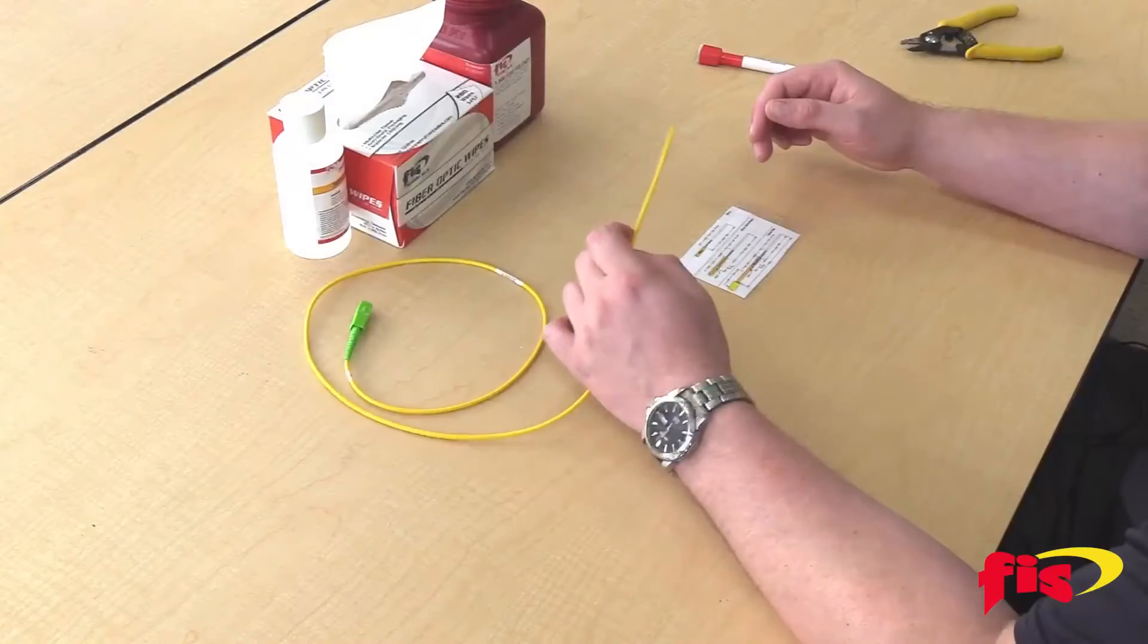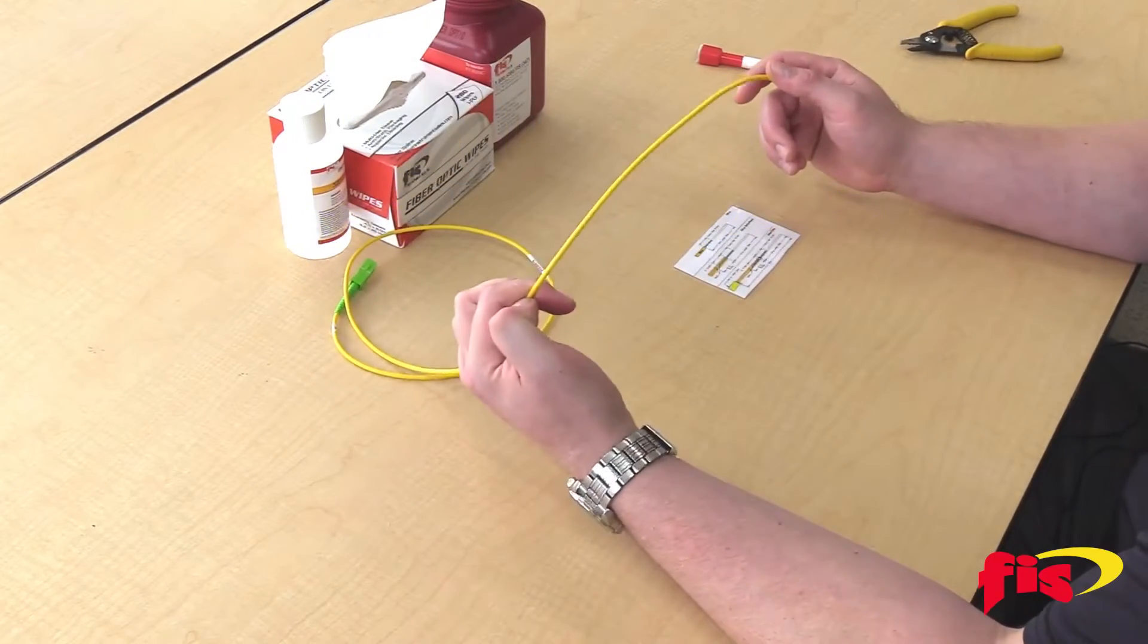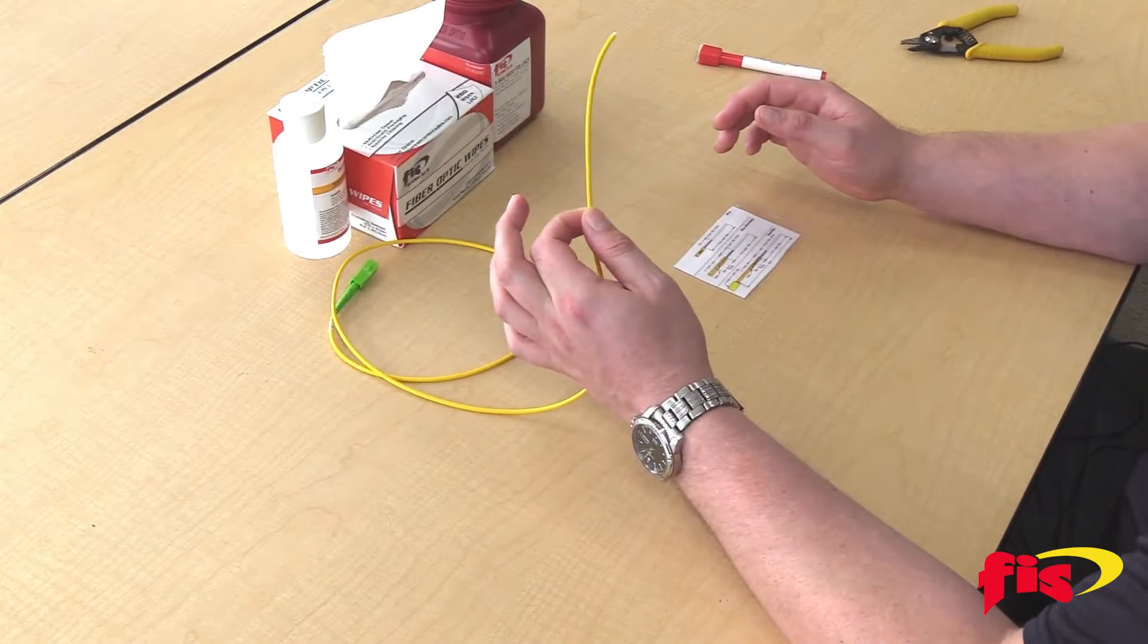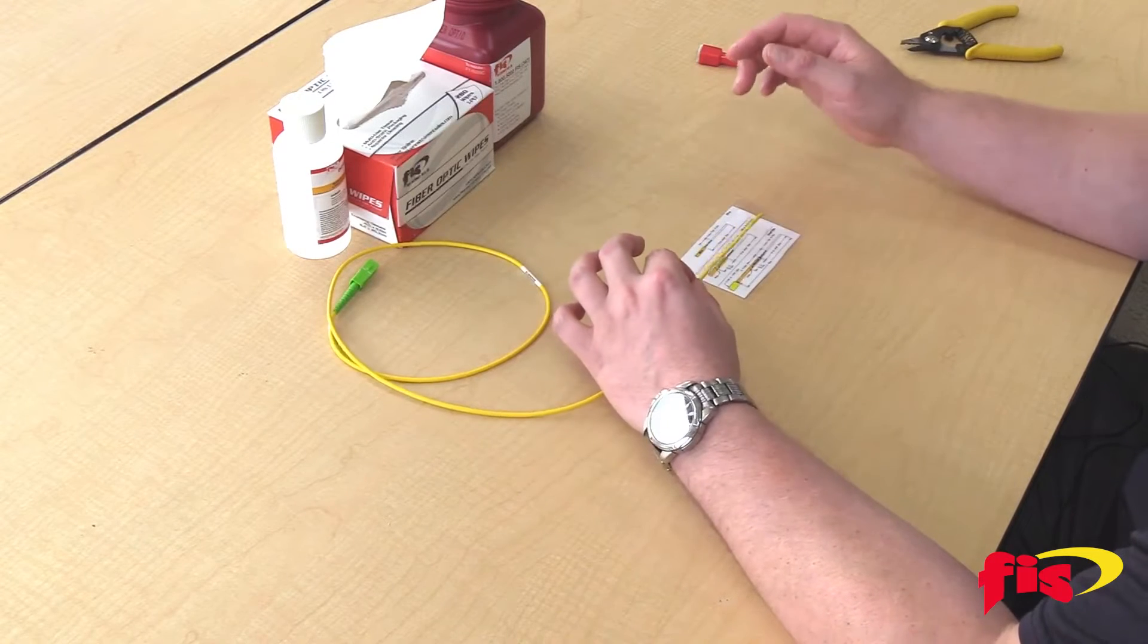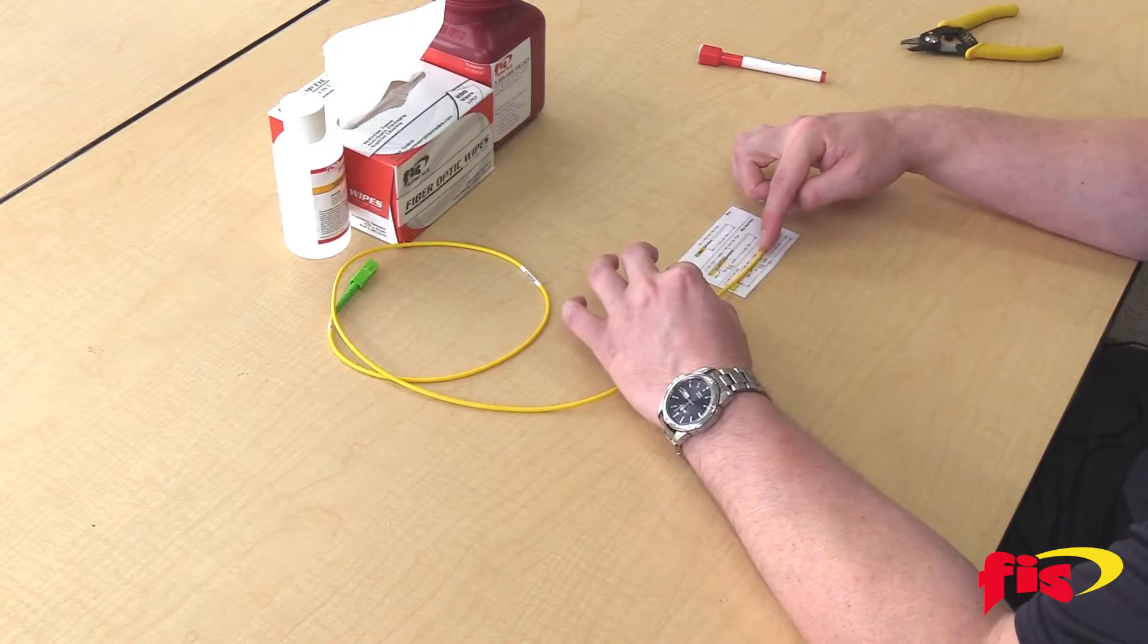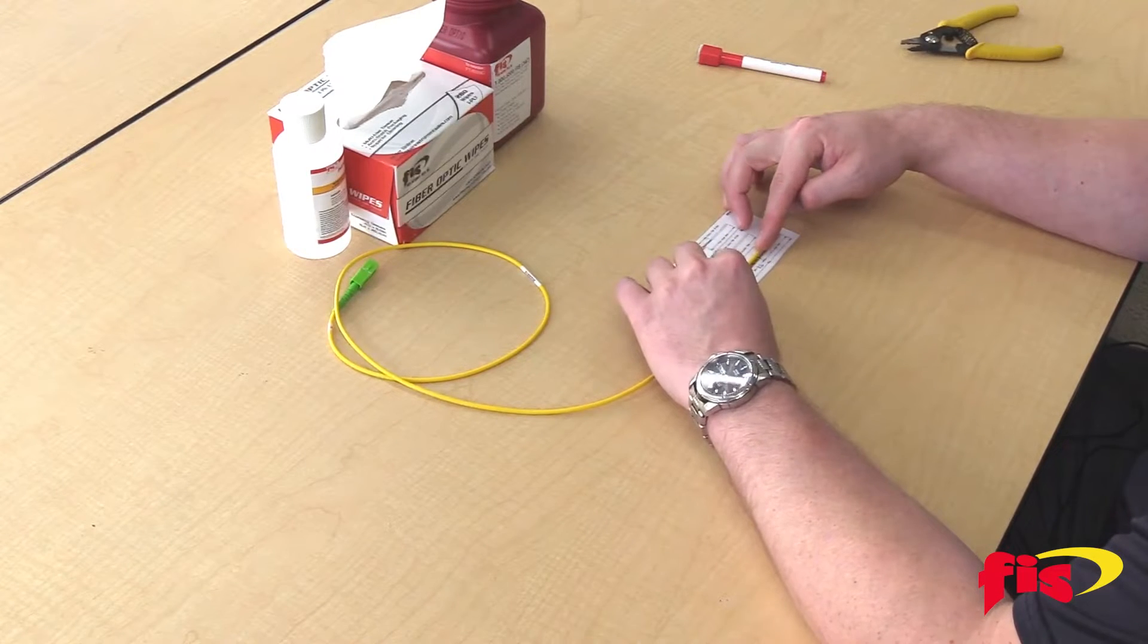First thing I'm going to do is take my fiber that I'm going to strip. You always want to notice there's a natural curl to the fiber. Always place the fiber down on your strip chart with the curl down and then flatten it out. It makes it a lot easier to work with.